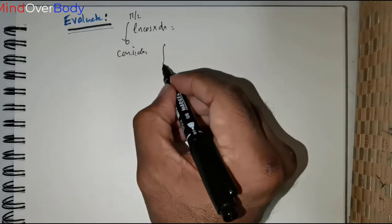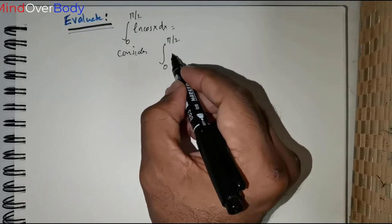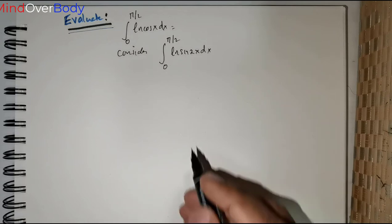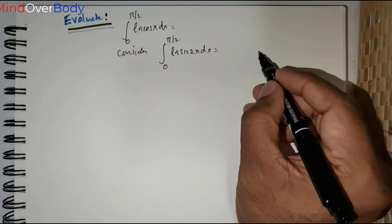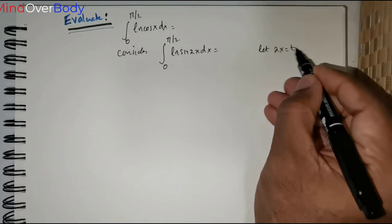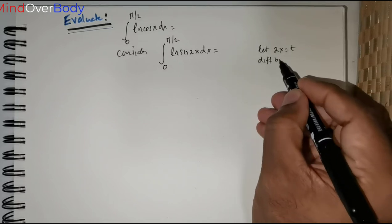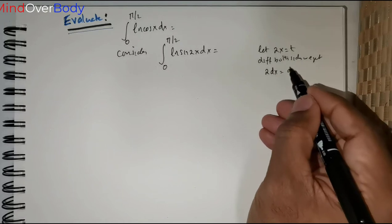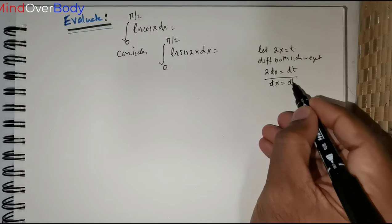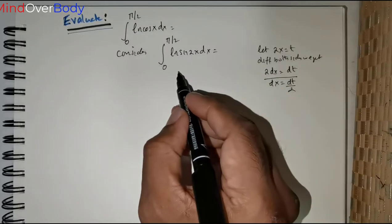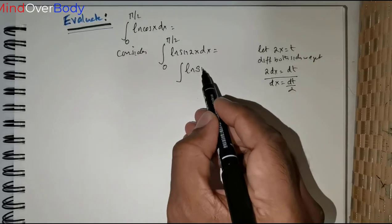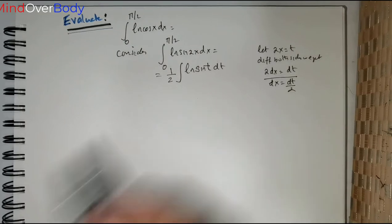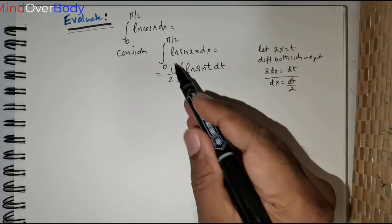To evaluate this question, I would first like to consider the integral from 0 to π/2 of ln(sin 2x) dx. You will know why I am considering this integral within a few minutes. To start, I would like to substitute 2x = t. Differentiating both sides, d(2x) = 2dx and dt = dt, so dx = dt/2. This integral is now rewritten as ∫ ln(sin t) · dt/2.